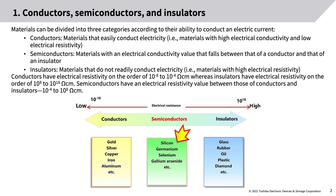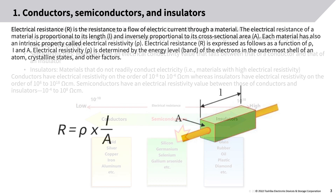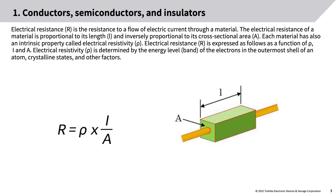Insulators are materials that do not readily conduct electricity, with high electrical resistivity. Conductors have electrical resistivity on the order of 10⁻⁸ to 10⁻⁴ ohm-centimeter, whereas insulators have electrical resistivity on the order of 10⁸ to 10¹⁸ ohm-centimeter. Semiconductors have an electrical resistivity value between those of conductors and insulators: 10⁻⁴ to 10⁸ ohm-centimeter.